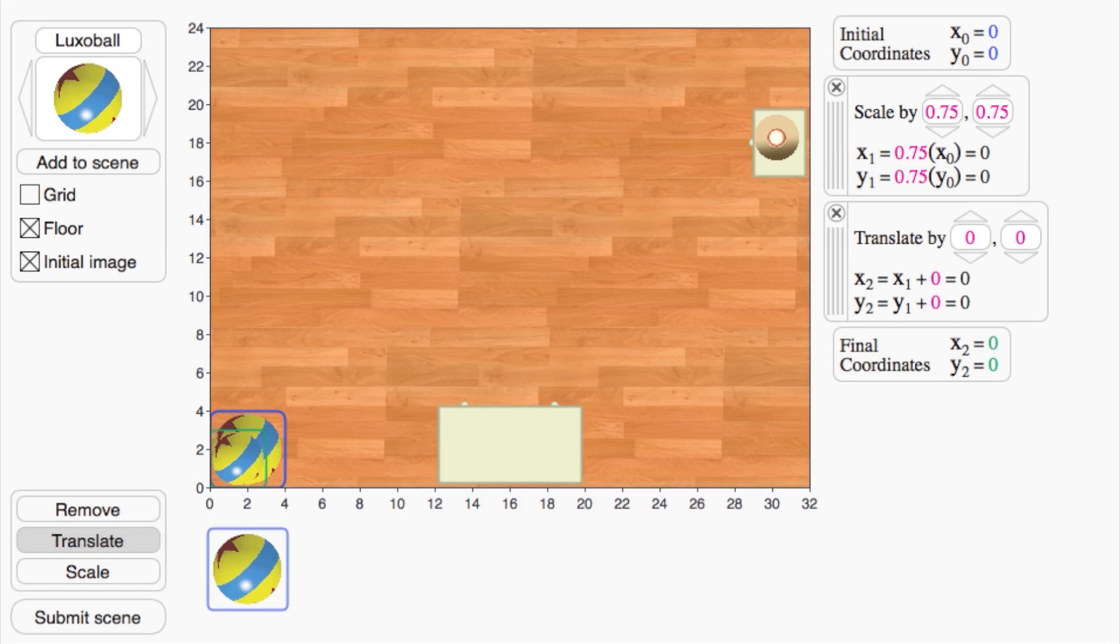We generally need to both scale and translate objects to put them where we want. I've already scaled the Luxo ball, so I can position it using translation. Again, as I click on an initial position, you can see where that point goes once it's gone through both operations.